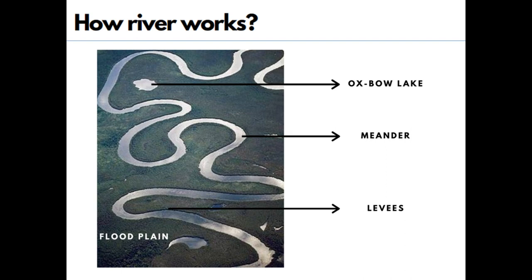Sometimes the river overflows its banks and floods the neighboring region, depositing sediments that make the land fertile. We call this area a floodplain. The raised banks along the river are called levees.